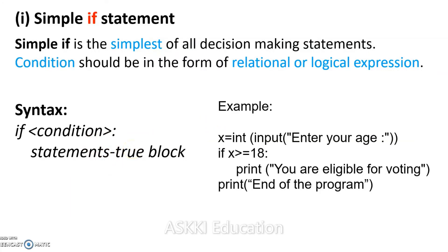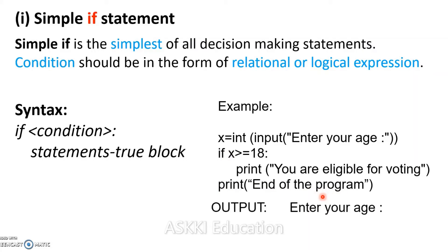Let me show you an example using Python code. We take input from the user and convert it to an integer value. If the value is greater than or equal to 18, we print that the user is eligible for voting. There is no else part in this example. The if statement is followed by a print statement at the end of the program.